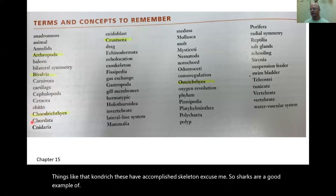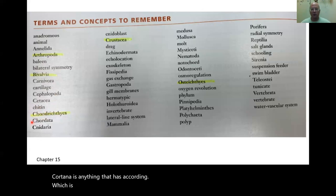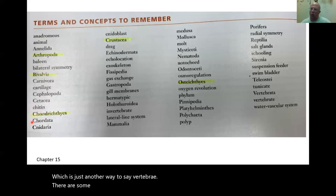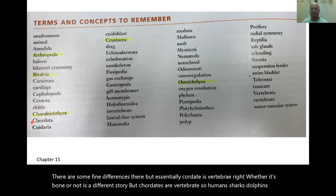Chordata is anything that has a chordate, which is another way to say vertebrae. There are some fine differences, but essentially chordate means vertebrate — whether it's bone or not is a different story. Humans, sharks, dolphins, and fish are all chordates.